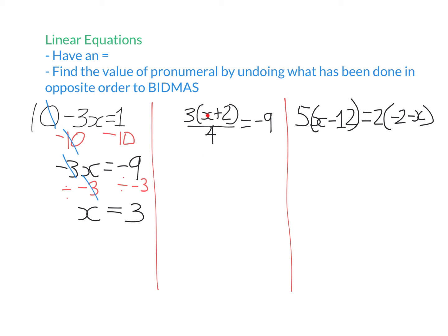In this next example, x has been added to 2 first, then multiplied by 3, then divided by 4. Since dividing by 4 was the last operation, it's the first to undo — like taking off your shoes before your socks. To undo dividing by 4, multiply both sides by 4. Divide 4 and times 4 cancel each other out, leaving 3(x plus 2) equals negative 9 times 4, which is negative 36.